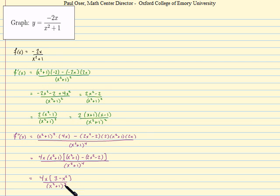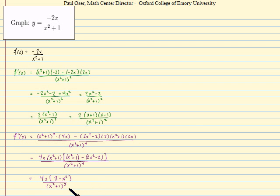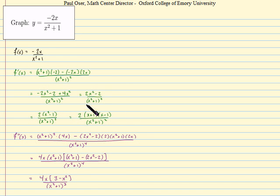We just need to be able to determine quickly where each expression is 0 or undefined, which is what factored form gives us. The whole point is that when the second derivative, first derivative, or original function is 0 or undefined, something interesting is generally happening in the graph. To keep our work organized, let's lay out three lines — one for each expression.